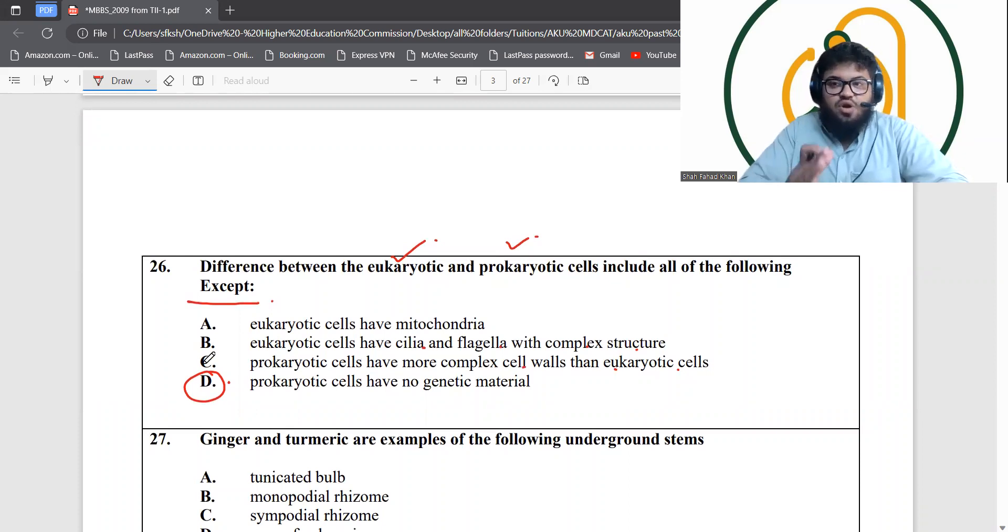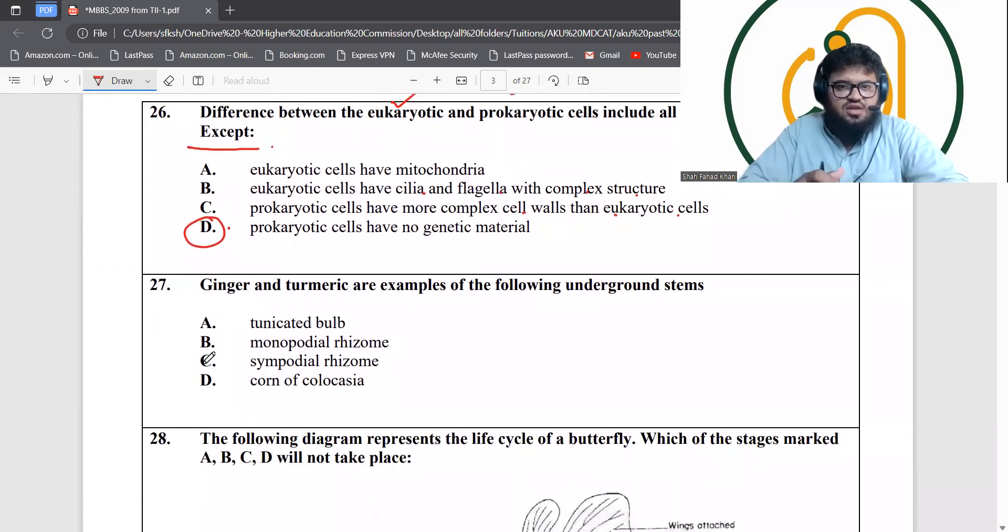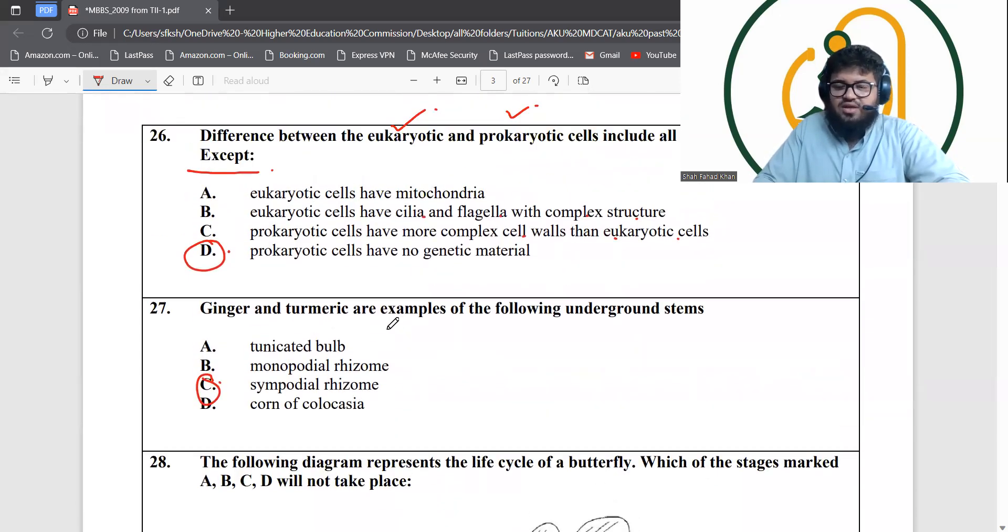Ginger and turmeric are examples of which of the following underground stems? I think this is from the textbook - sympodial. I'm not pretty sure about this one. Let me just quickly check. Yeah, sympodial rhizome. This is factual, from the text.